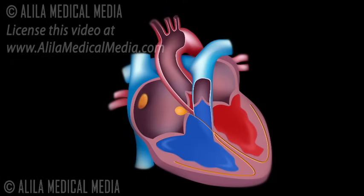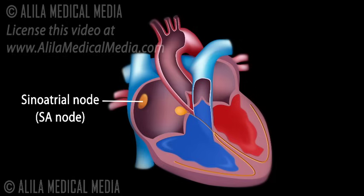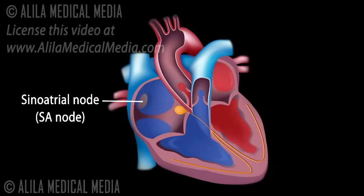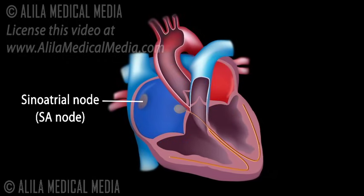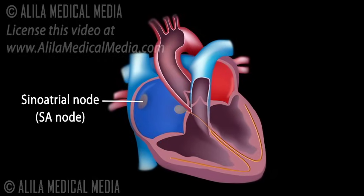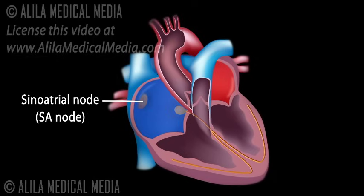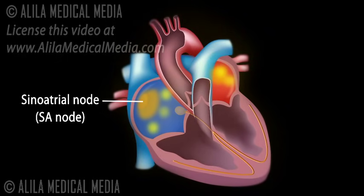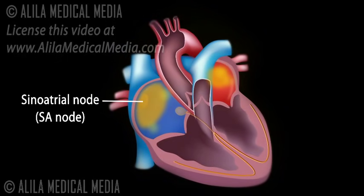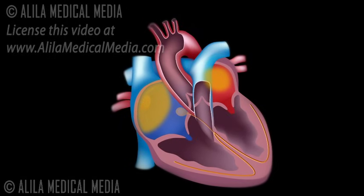The cardiac conduction system consists of the following components. The sinoatrial node, or SA node, located in the right atrium near the entrance of the superior vena cava. This is the natural pacemaker of the heart. It initiates all heartbeats and determines heart rate. Electrical impulses from the SA node spread throughout both atria and stimulate them to contract.